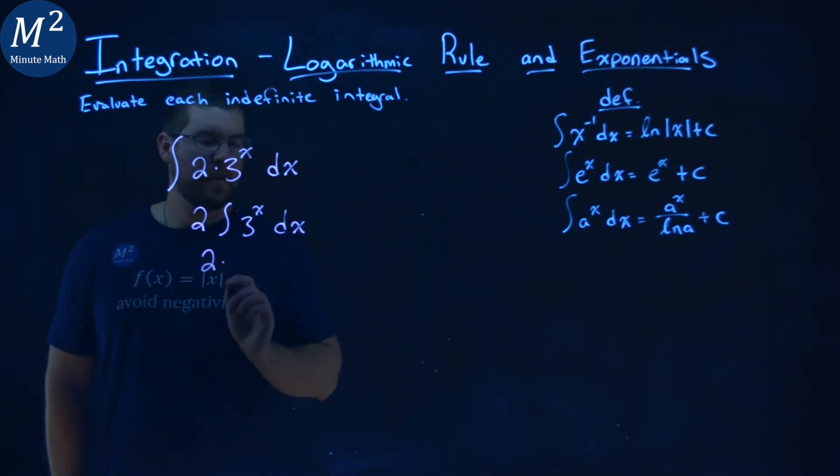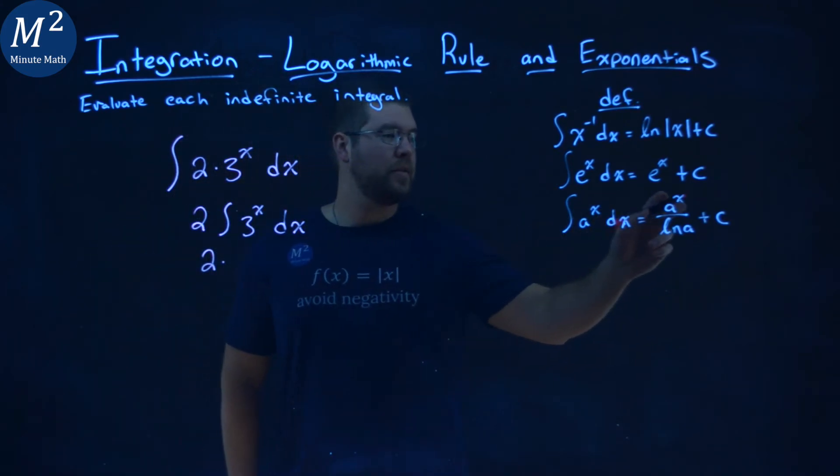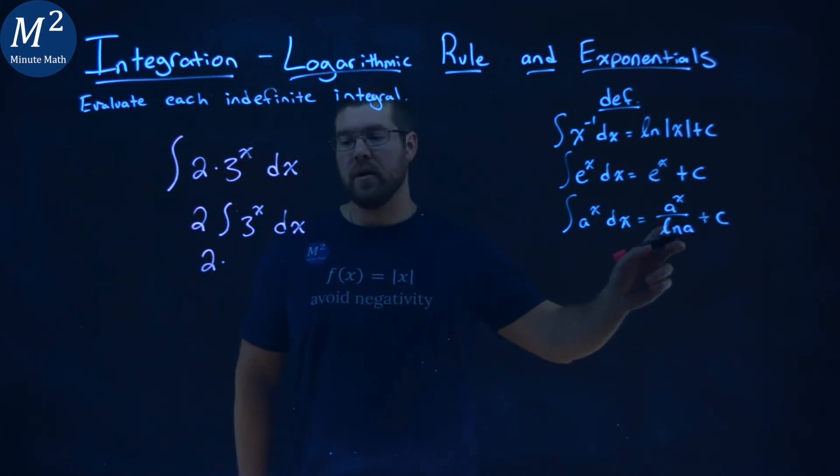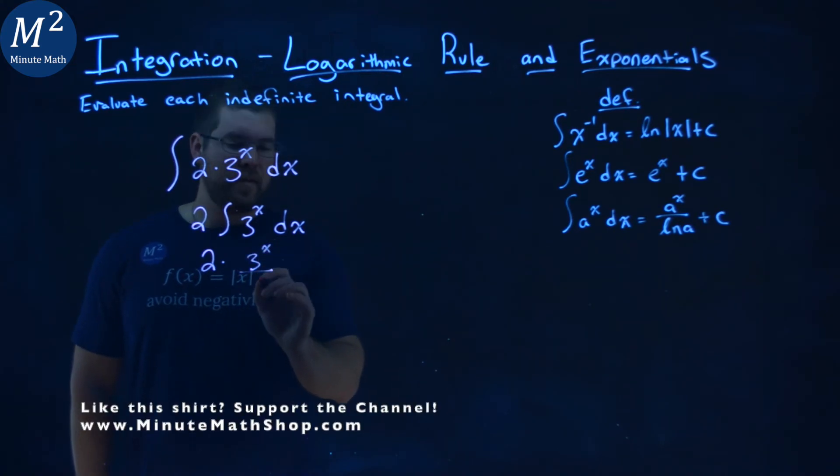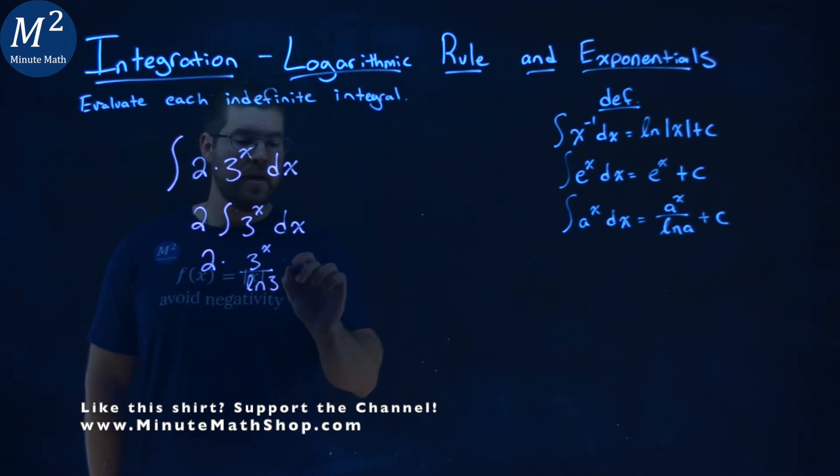Well, the 2 stays up front, multiplied, and they said a to the x. So, it's a to the x over the natural log of a. A being 3. So, we have 3 to the x power over the natural log of the inside part, or the a value, which is 3. Then we have a plus c.